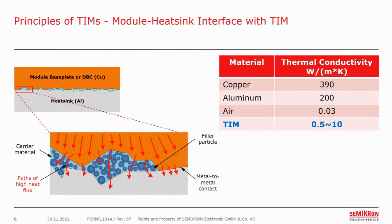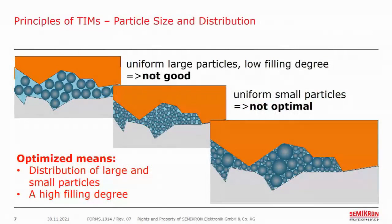Taking a close look at a mounted module, some very small air gaps occur due to the module or cooler surface roughness and bending. As air is a very bad thermal conductor, it needs to be replaced by a better conducting material. The goal is to use only enough TIM to displace the air while maintaining metal-to-metal contact where possible. The particles have a significant impact in contacting the surfaces properly and transferring a high heat flux. When particles are uniform and large, the filling degree is limited and the distance between the module and the heat sink is high, which results in a higher thermal resistance.